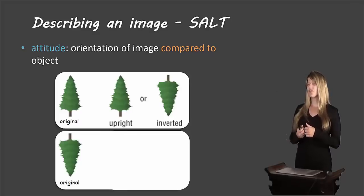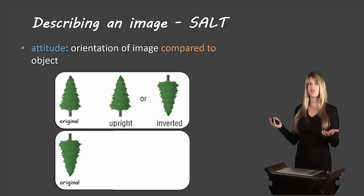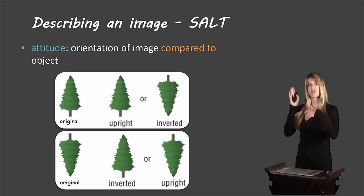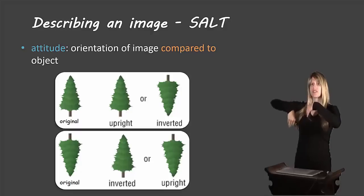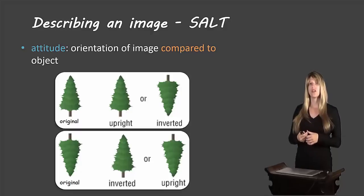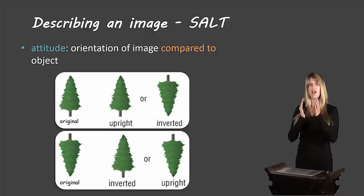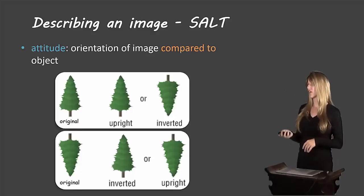Be careful here. If the original tree is upside down, then inverted would actually be a tree that's right side up, because they are different from each other. A tree that's upside down would be called upright because it's facing the same way as the original. We're always comparing to the original, not to what we're used to seeing in the real world. Upright means facing the same direction; inverted means facing different directions.